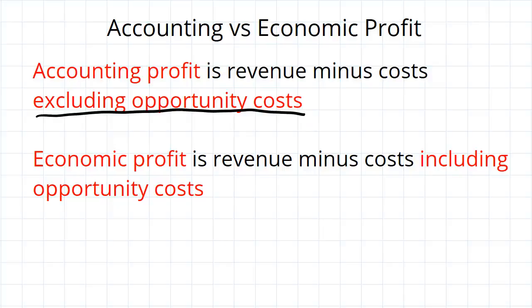Accounting profit is useful for measurement purposes — it's what you will see on a balance sheet, hence the term accounting profit. But economic profit is what you get when you actually include opportunity costs, and this is more of an economic decision-making tool. When we make economic decisions, we apply the cost-benefit principle, and that requires that we account for all costs, including the opportunity costs.